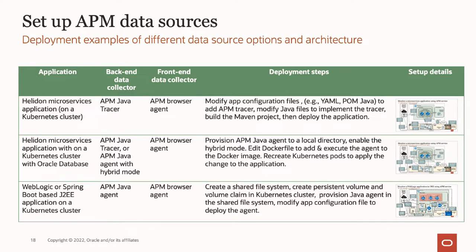Another data source option for Helidon microservice applications is to use the Java agent hybrid mode. Using hybrid mode, spans are collected from the Java agent side with bytecode instrumentation and also from the application's OpenTracing instrumentation, providing a complete picture of the application flow. For example, if the application makes JDBC calls connecting to an Oracle database, this method provides correlating traces connecting Helidon service spans and JDBC spans.